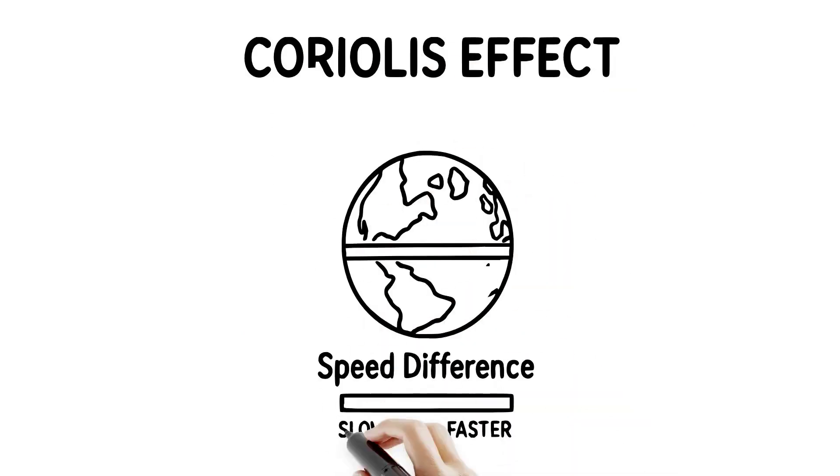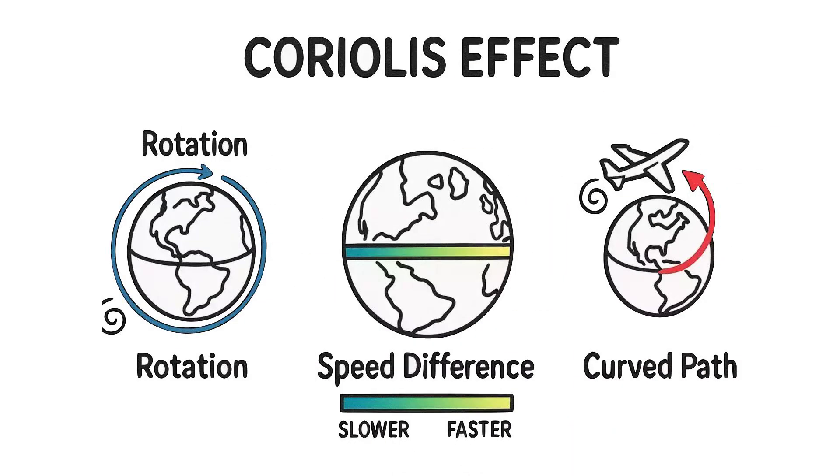Step 1: Earth rotates eastward. Step 2: Objects near the equator move faster than those near the poles. Step 3: As air or water travels north or south, it carries that speed difference, appearing to curve.